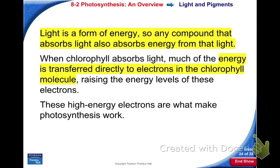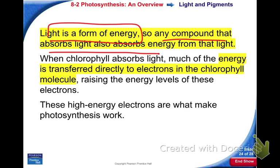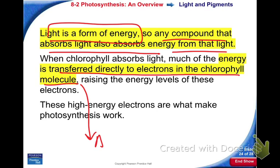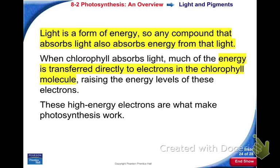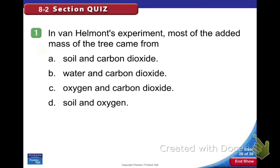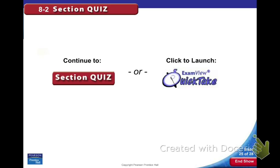Light is a form of energy, so any compound that can absorb light absorbs the energy from that light. That energy is transferred directly to electrons in the chlorophyll molecule, and from those electrons it goes to ATP. You guys write this stuff down but you don't always understand it. We'll do the quiz tomorrow. Don't log off your computers — go to Google Classroom.